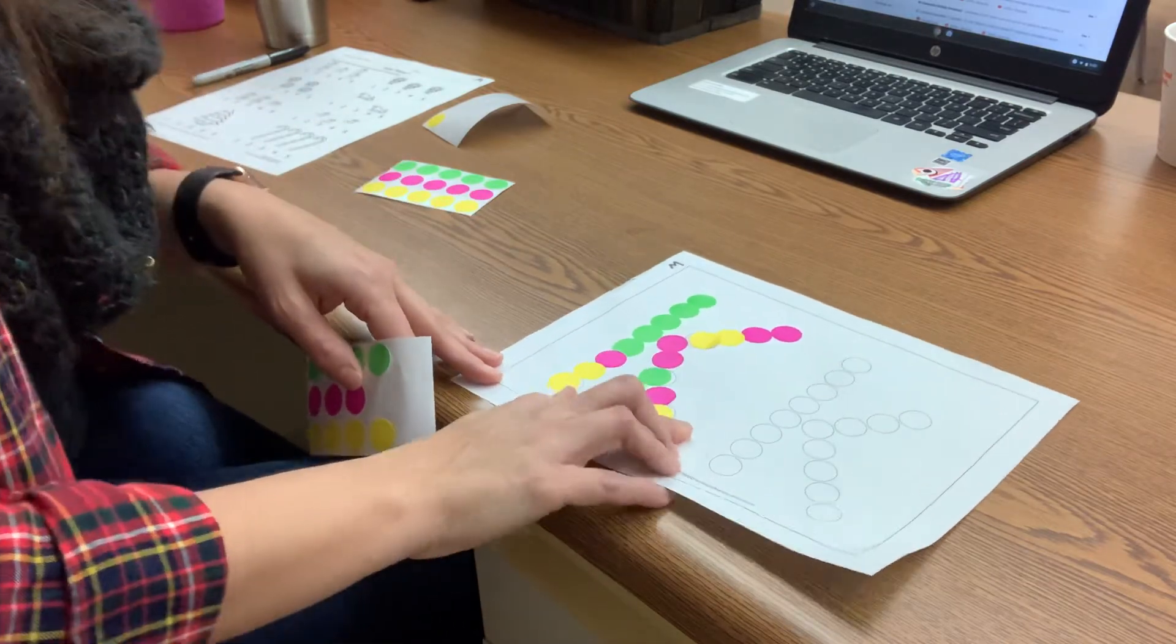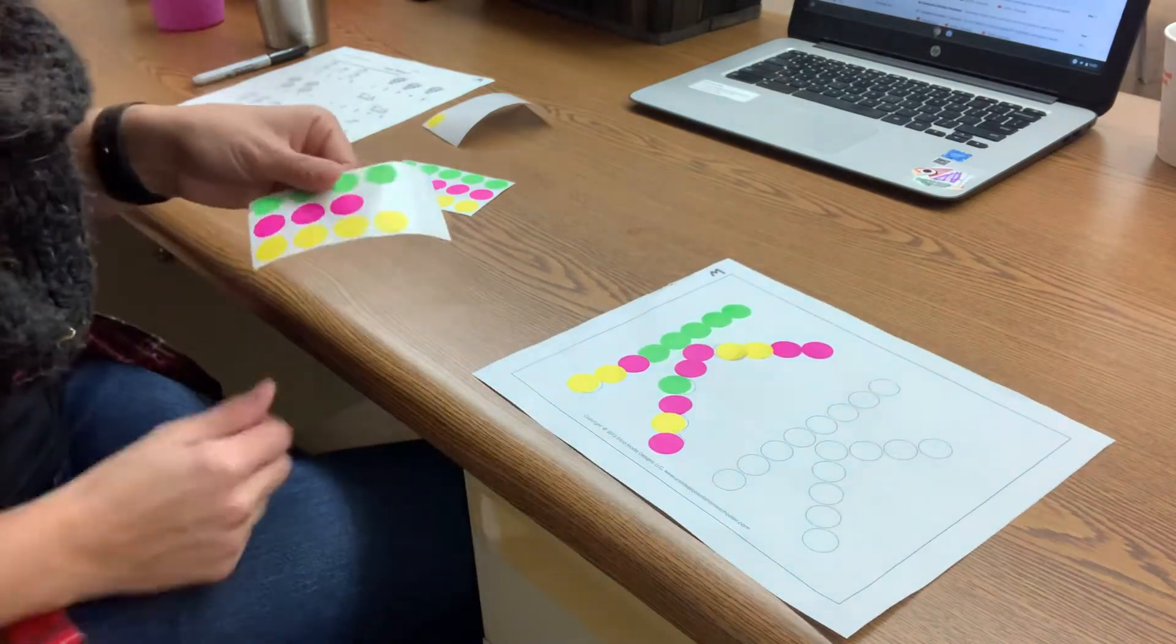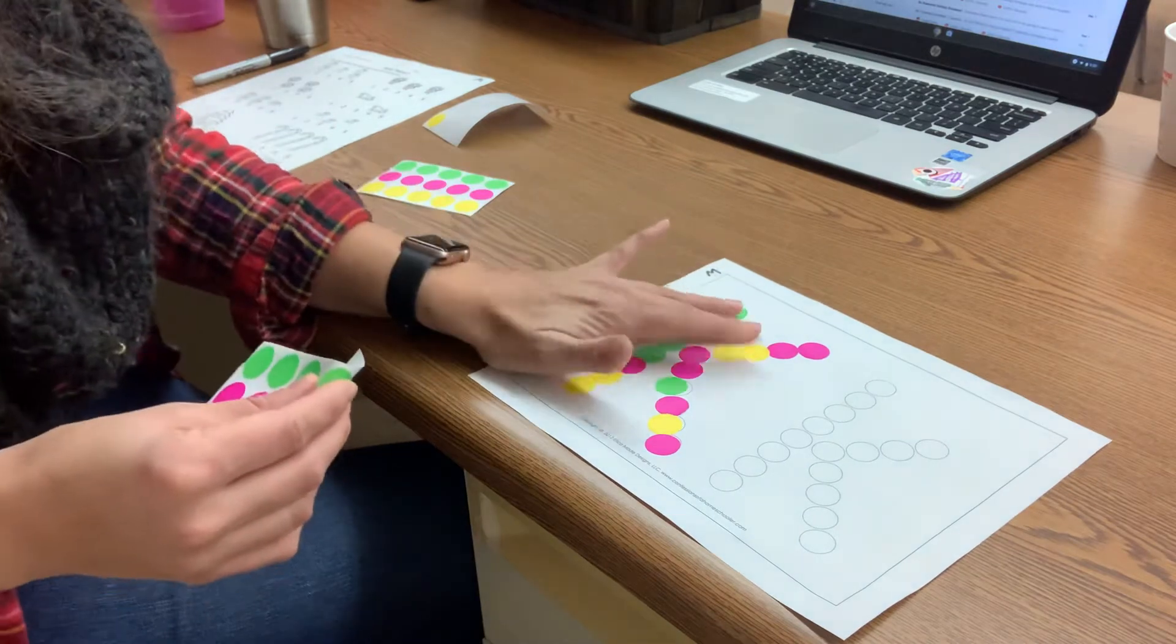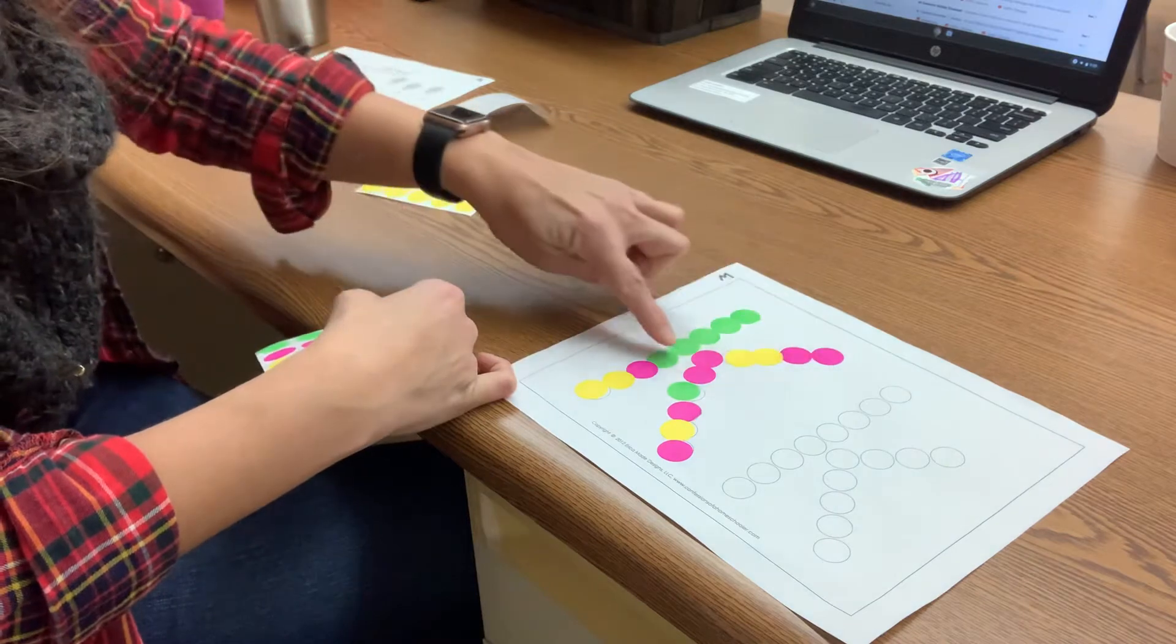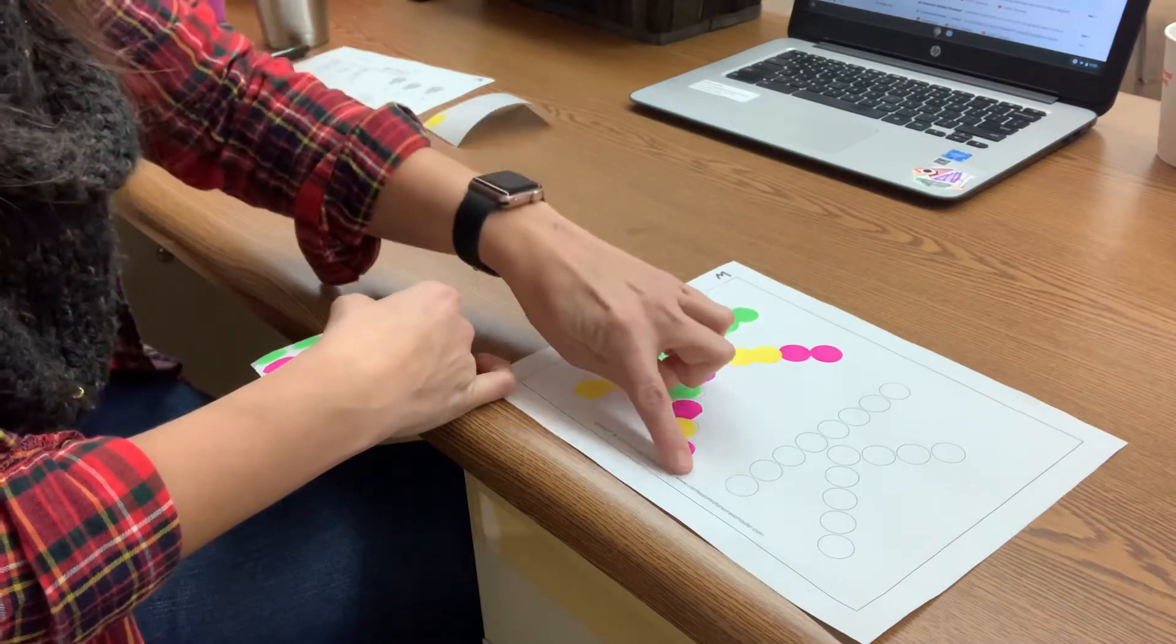Now K kind of sounds like C sometimes. K. Right? So that's our uppercase K. Straight line down, diagonal line in, diagonal line out. Okay?